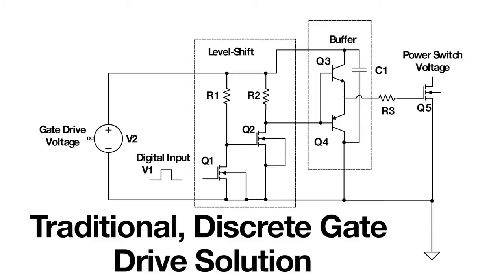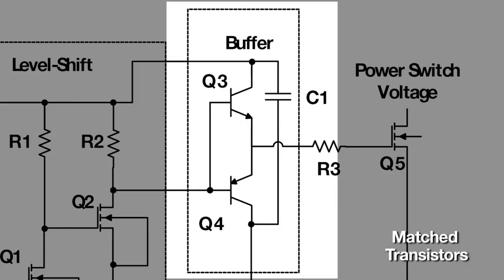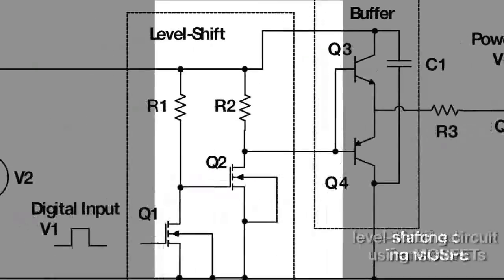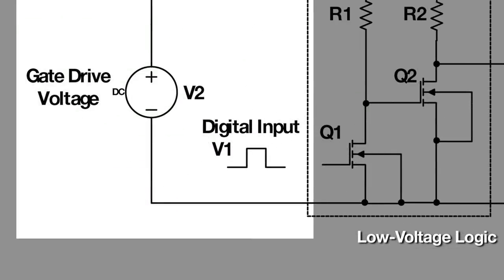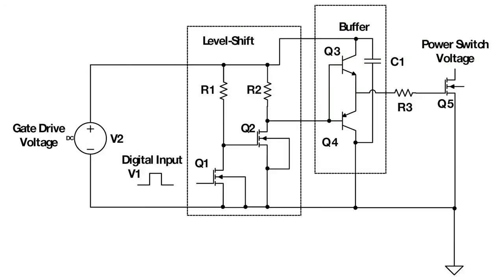Traditionally, designers have accomplished gate driving using matched transistor pairs. This buffer, combined with a level-shifting circuit using MOSFETs, provides strong sourcing and sinking currents to the gate of the power switch at the appropriate gate voltage for proper turn-on. This circuit, controlled by a logic-level input signal provided in the bottom left at V1, shows that performing these functions can lead to many individual circuit elements.